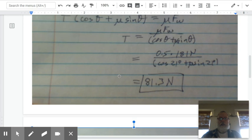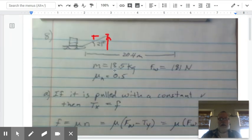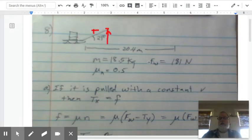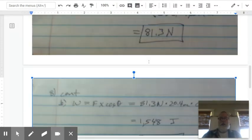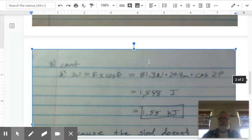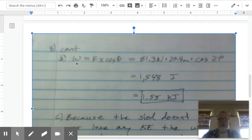So that's part A. And part A is the difficult part of this problem. The second part of the problem was, if the sled is pulled 20.4 meters at a constant velocity, how much work is done by the person pulling the sled? And to do that, we simply use the work equation, which is work equals force times distance pulled times cosine theta.